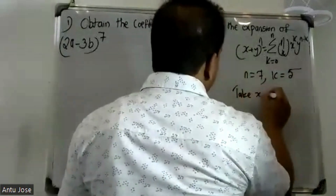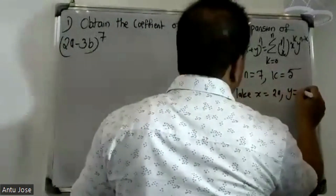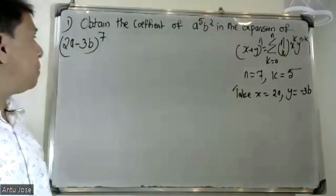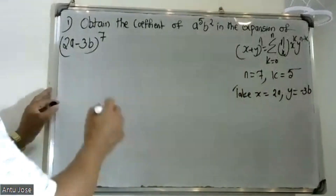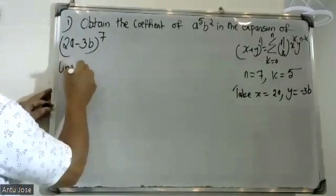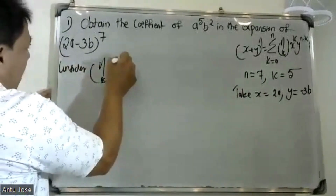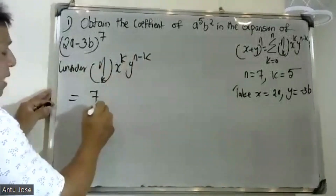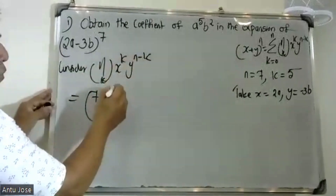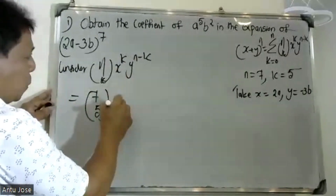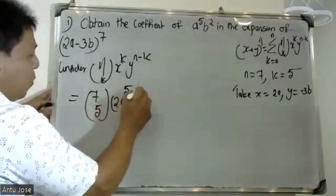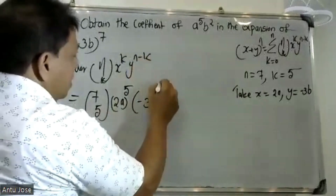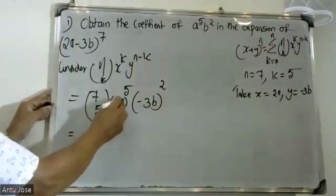Here x is equal to 2a and y is equal to minus 3b. So n equals 7. We need the term with a raised to 5 and b squared, so k equals 5. The required term is 7C5 times 2a raised to 5 times minus 3b raised to 2.